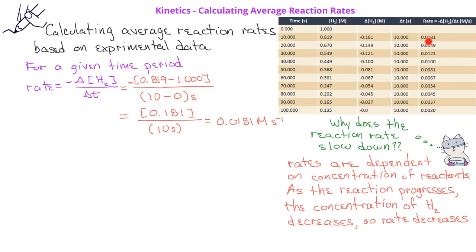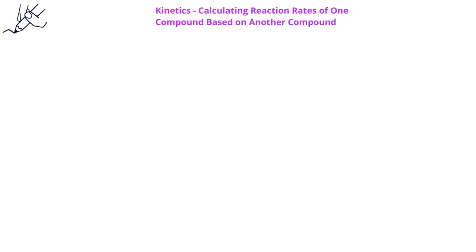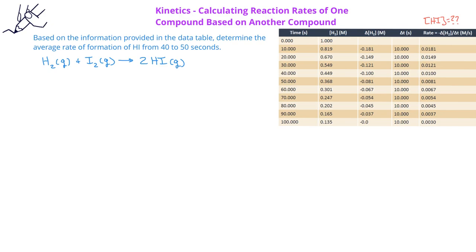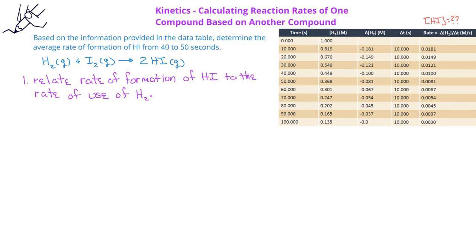In the previous slide, we saw how to calculate the average rate of consumption of a reactant from data provided in a data table. But you would notice that this data table does not provide information about the concentration of the product hydrogen iodide in this reaction. What if we wanted to know the rate of formation of hydrogen iodide from 40 to 50 seconds? That data is not given, but from a previous video, we learned how we can relate the rate of formation of a product to the rate of consumption of a reactant.